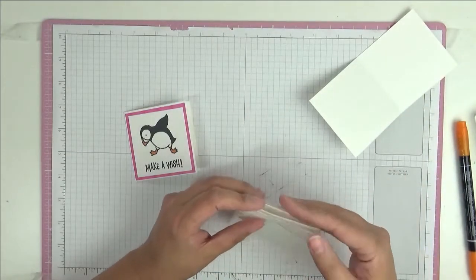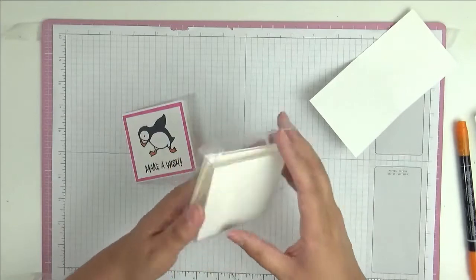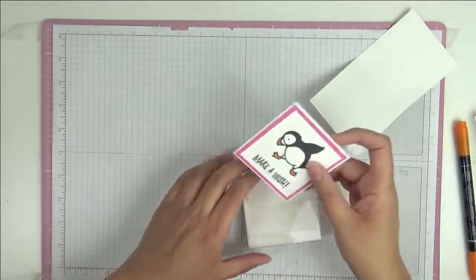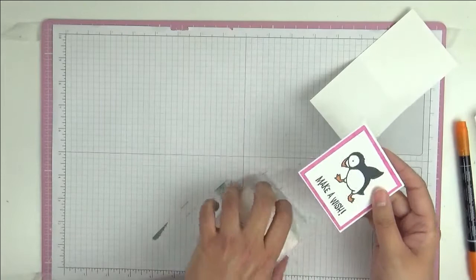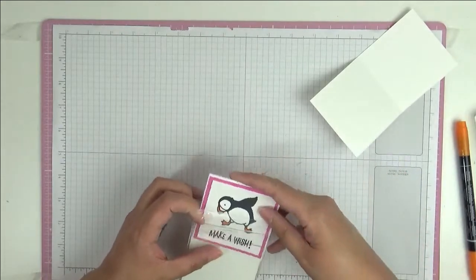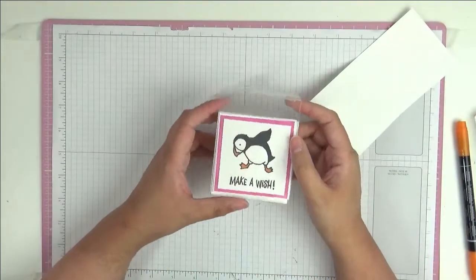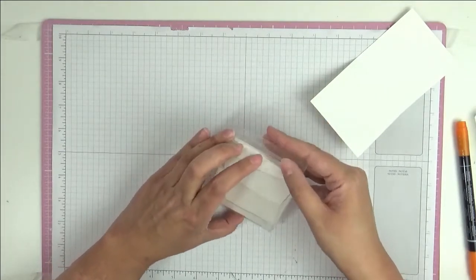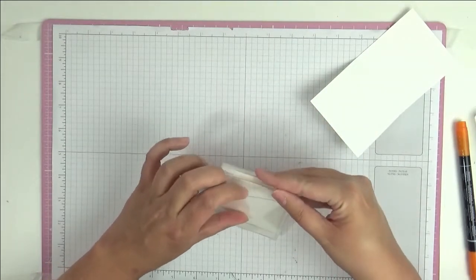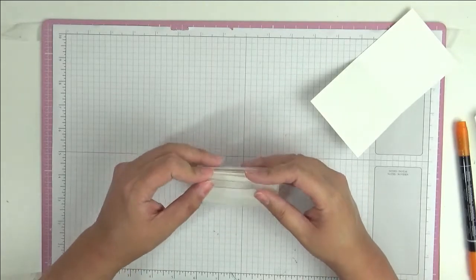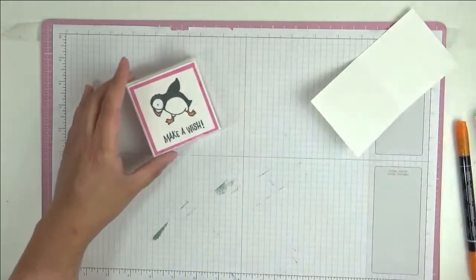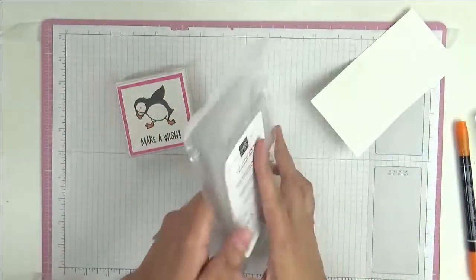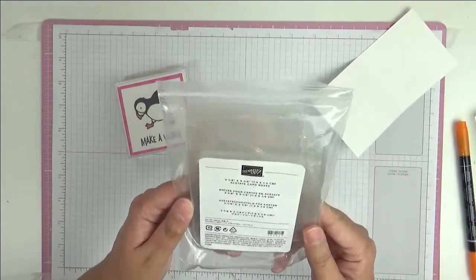And they fit in these dinky little acetate boxes. I'm so grateful that these boxes have stayed in the catalogue because I absolutely love them. We have them here as the 3x3 size and we have them in the standard card size as well. They come flat like that in a pack of 10.